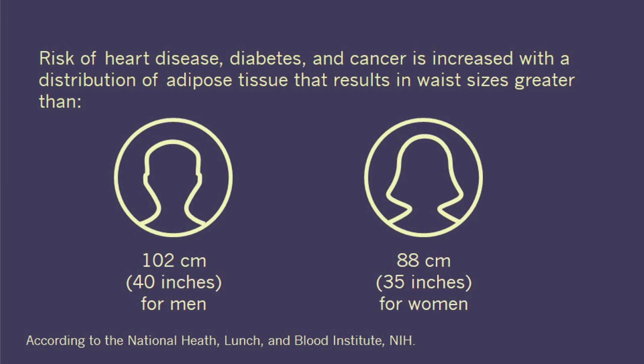For women, the risk increases if waist circumference is greater than 88 centimeters or 35 inches. For men, the risk increases if waist circumference is greater than 102 centimeters or 40 inches, according to guidelines from the National Heart, Lung, and Blood Institute. Because of all the data showing the harmful effects of excess adipose tissue, obesity was finally classified as a disease in June 2013.